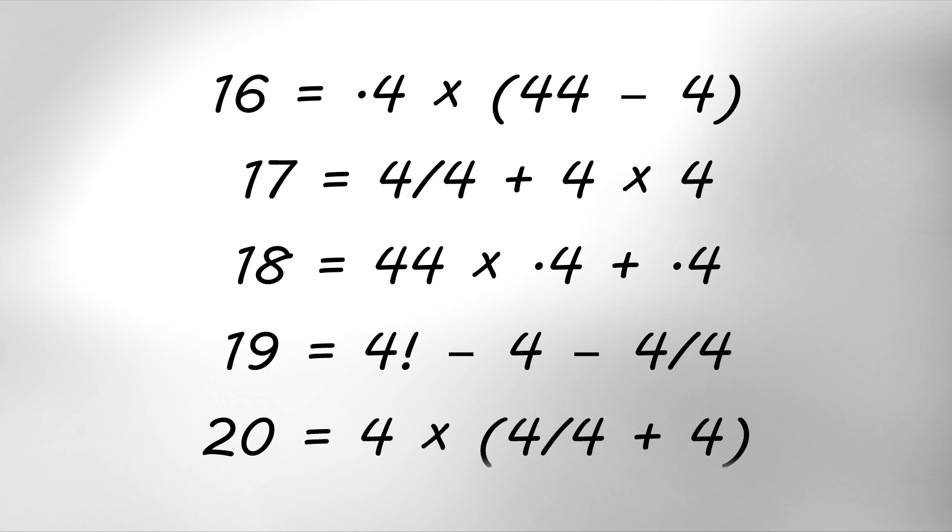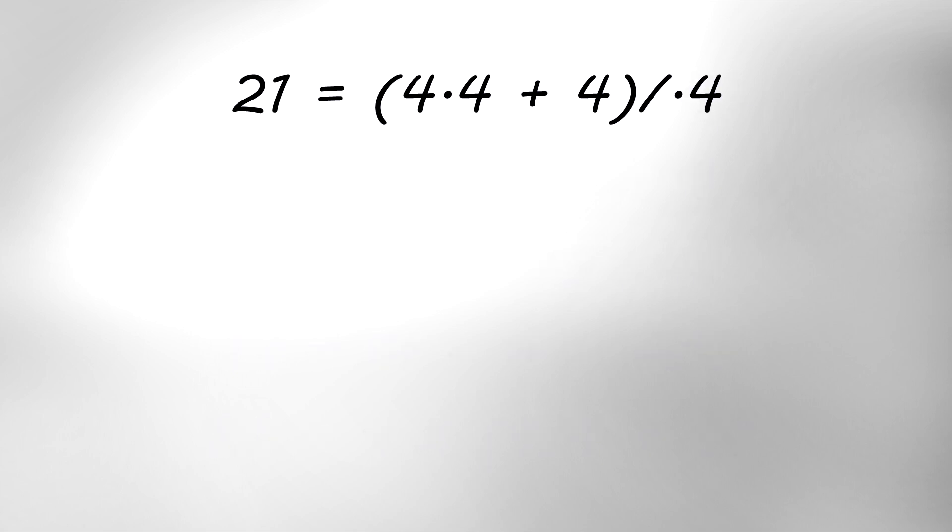20 equals 4 times 4 over 4 plus 4. 21 equals 4.4 plus 4, divided by 0.4. 22 equals 44 times the square root of 4, divided by 4.